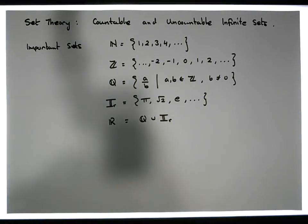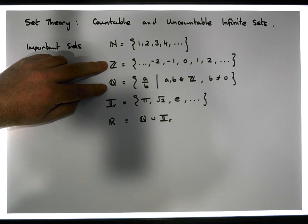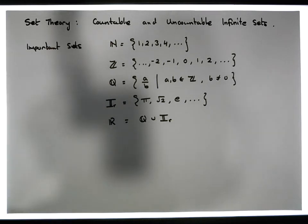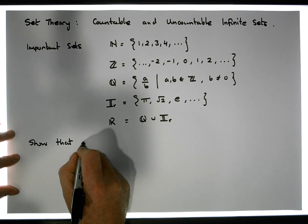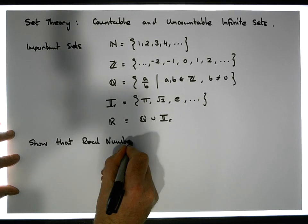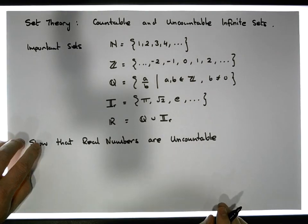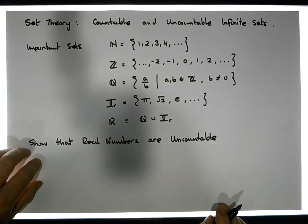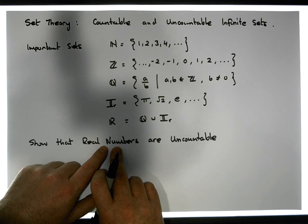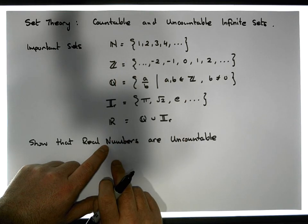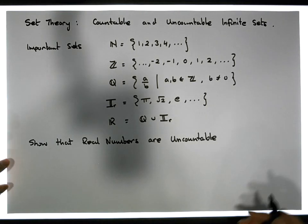In a previous video we showed that the integers and the rationals are countable — meaning we can create a bijection between the natural numbers and those sets. In this video, what we want to show is that the real numbers are uncountable. That means we cannot list them the way we can list the natural numbers, because if we could list them we would have a one-to-one correspondence with the natural numbers, which would make them countable by definition.